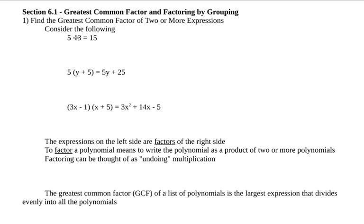We have 5 times 3 equals 15. We have a couple of different expressions here. If we take 3x minus 1 times x plus 5, it equals this thing. If we're going to the right, we would generally refer to this as simplifying.